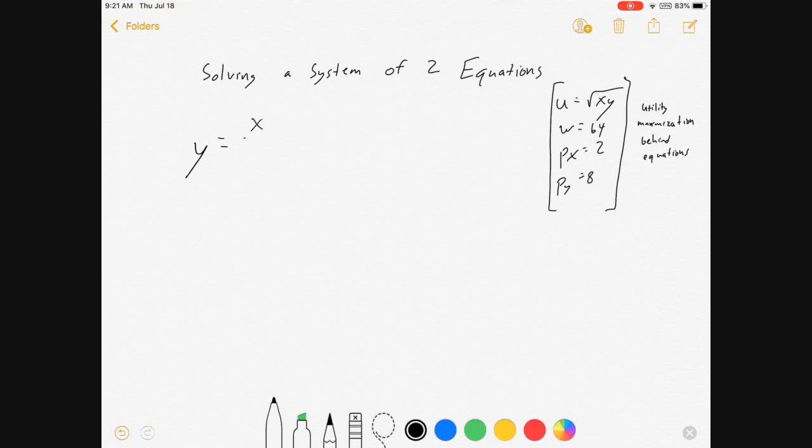We got y is equal to x over 4, and we've got that 64 equals 2x plus 8y. That's a simple system of equations.